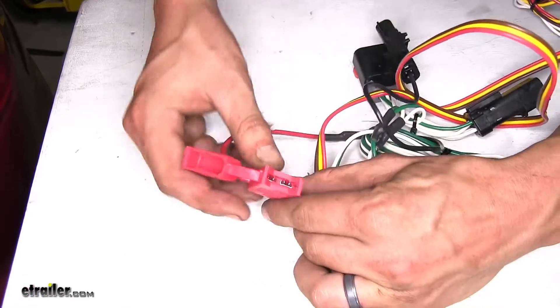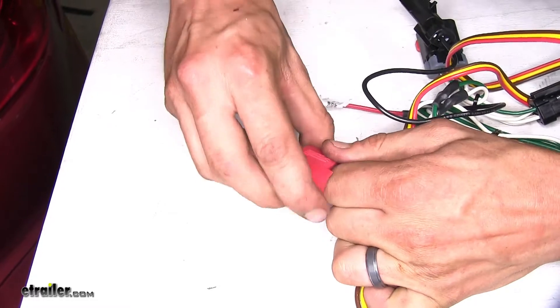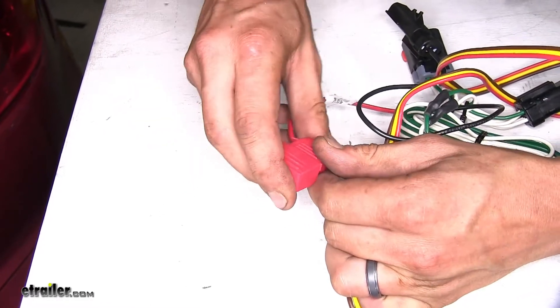On our fuse holder here, our dust cover doesn't seal quite as well as it does on the Takansha, so it is a little bit different there.